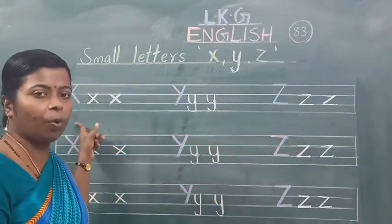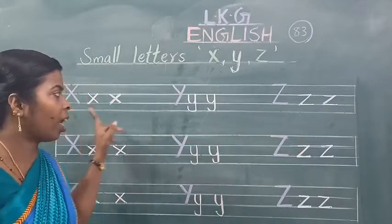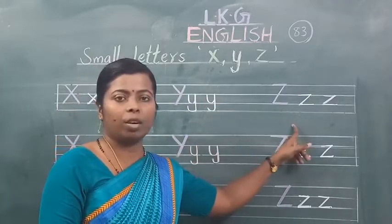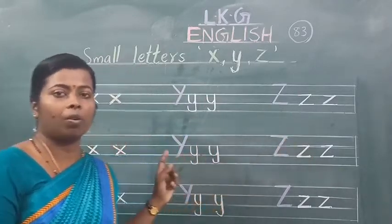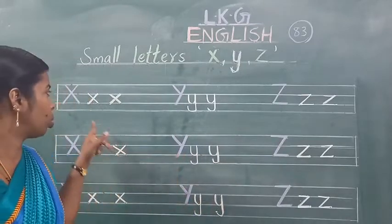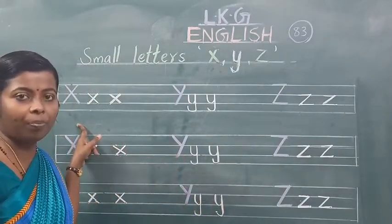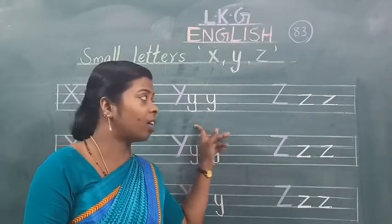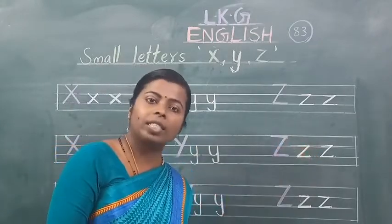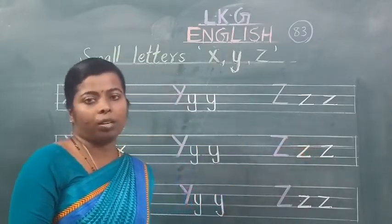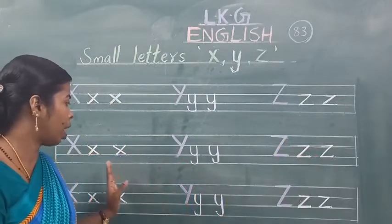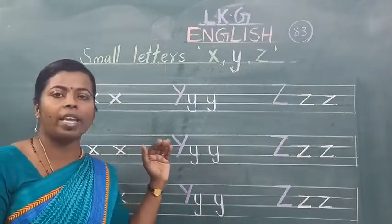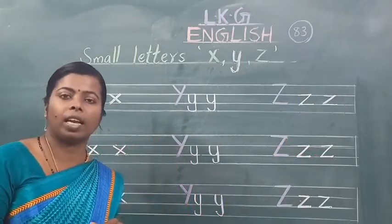X for X-ray. Y for Yacht. Z for Zebra. Bolo jor se — X for X-ray, Y for Yacht, Z for Zebra. Samjh mein aya hai kya? Small letters X, Y, Z kaise likhna hai.